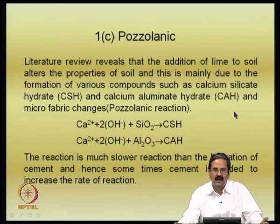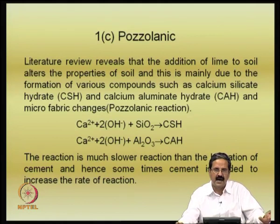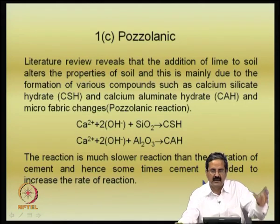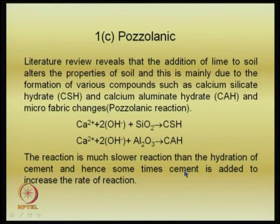Sometimes we also add a bit of cement, because cement reacts faster — the formation of compounds is much faster compared to soils alone. Suppose you have only a lime column: lime plus cement can be added; people can add a bit of cement along with lime to make the installation of lime columns or other materials faster. So essentially there are three mechanisms: one is the cation exchange, the second is flocculation, and the third is the pozzolanic reaction.